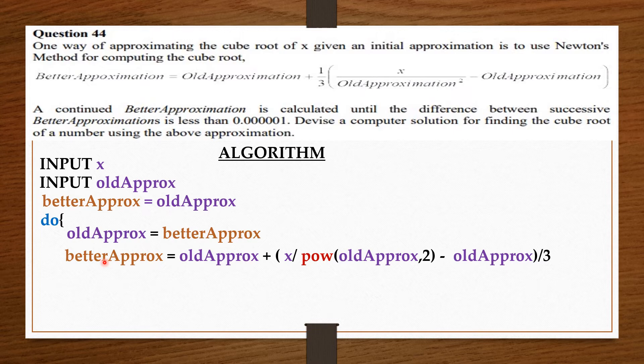So when we get betterApprox, we give it back to oldApprox. Put it back into the formula. Get betterApprox. Give the betterApprox to the oldApprox. Put the oldApprox into the formula. Get betterApprox.